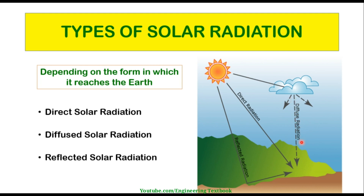Diffused solar radiation reaches the earth's surface after having undergone multiple deviations in its trajectory — for example, through clouds or gases present in the atmosphere. So diffused radiation changes direction and then radiates on the surfaces. Reflected solar radiation is the fraction of solar radiation that is reflected by the earth's surface itself, in a phenomenon known as the albedo effect — it first radiates to the surface and is then reflected. This is known as reflected solar radiation.